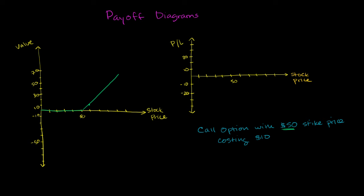And if we think about the actual value of the position, if we want to factor in how much we paid for the option, we would just shift this down by $10, because as the holder, we would pay $10 for that. So it would look like this.